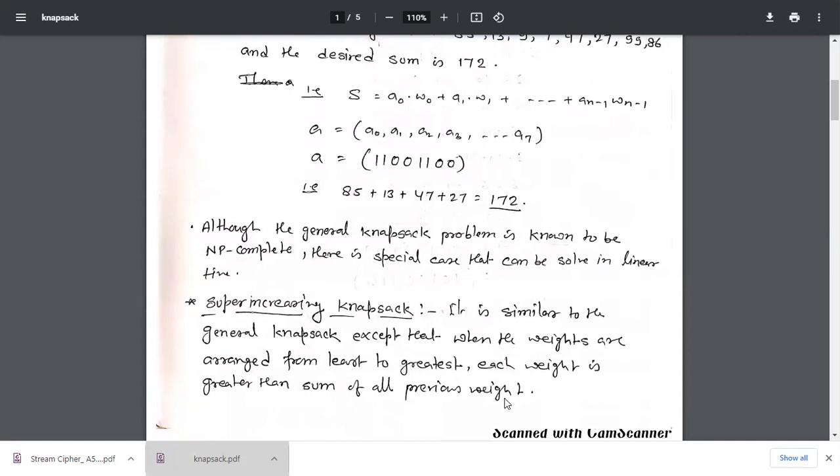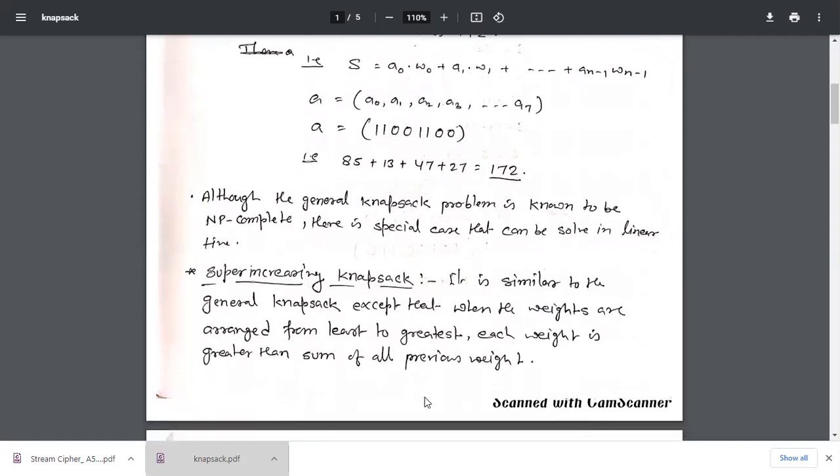If we arrange our given weights in increasing order such that each weight is greater than the sum of all previous weights, we will arrange in increasing order such that the weight is greater than the sum of all previous weights. Then it is called super increasing knapsack.